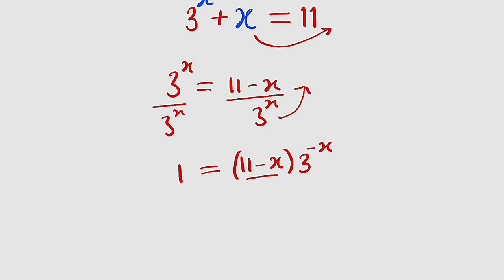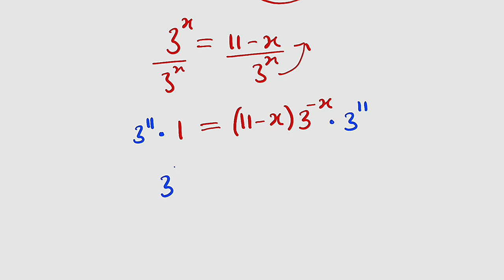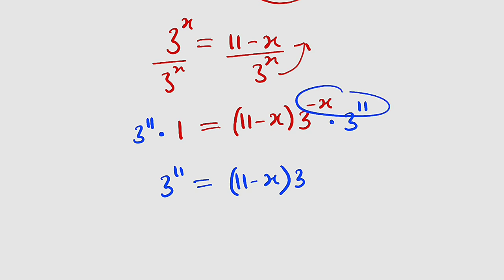I would like to have 11 minus x in the exponent position, and we can achieve that by multiplying both sides by 3 to the power of 11. The left hand side becomes 3 to the power of 11, and the right hand side becomes 11 minus x multiplied by 3 to the power of negative x times 3 to the power of 11. Using the laws of indices with a common base, we add the exponents: negative x plus 11 gives 11 minus x.